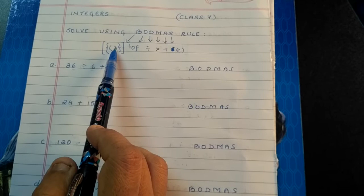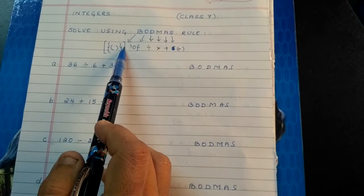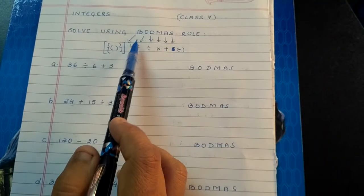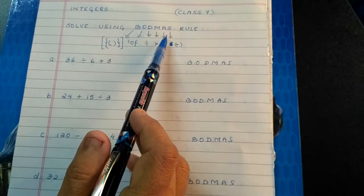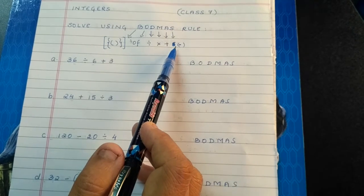First you have to solve brackets: round bracket, brace bracket, rectangular brackets. O means of, D means division, M means multiplication, A means addition, and S means subtraction.